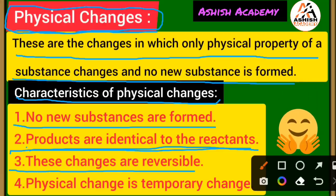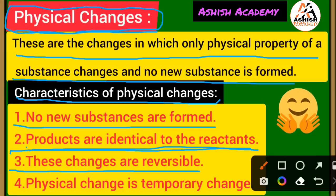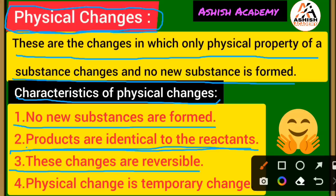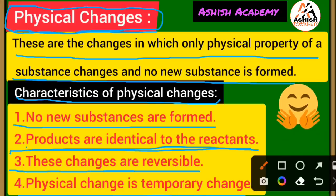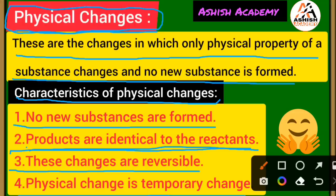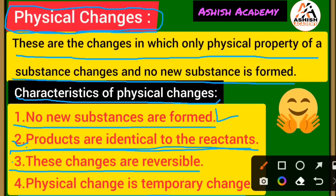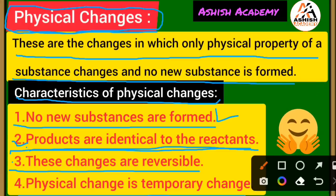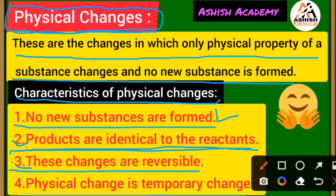Third point: the changes are reversible. This means we can get back the original substance again. Fourth point: physical change is a temporary change — it is not a permanent change, meaning it lasts for a short time, it is temporary. Physical change is a temporary change.